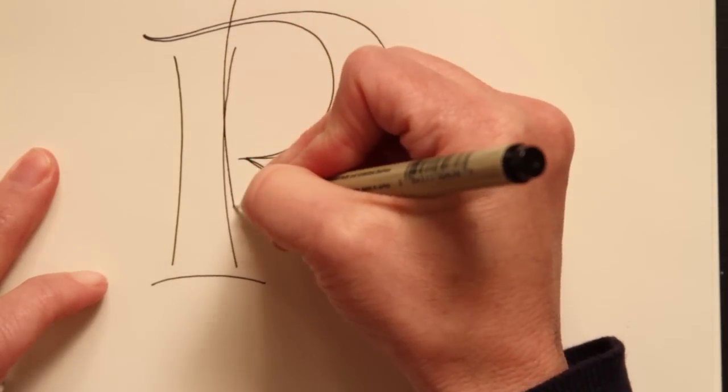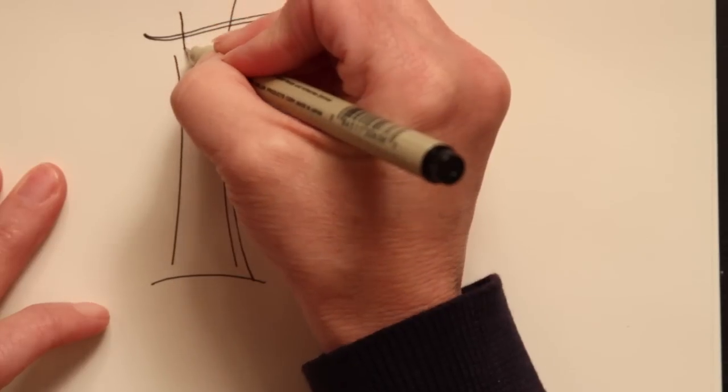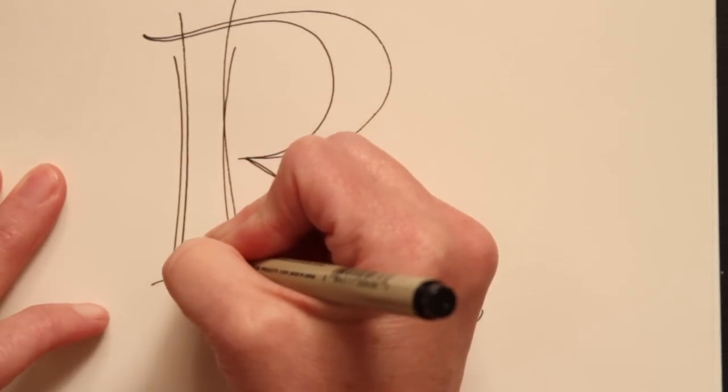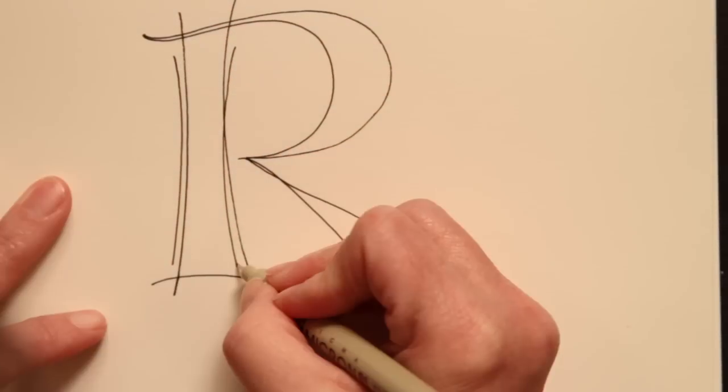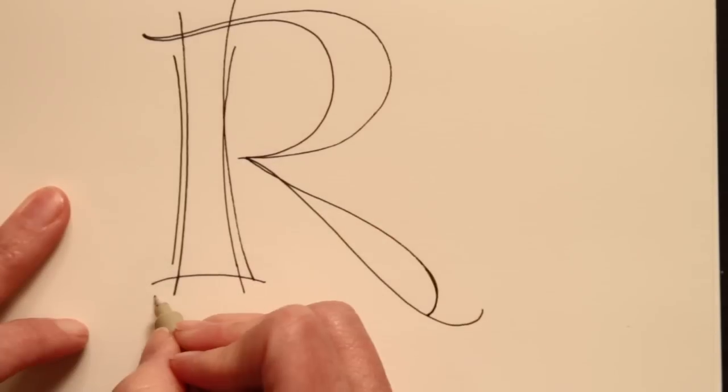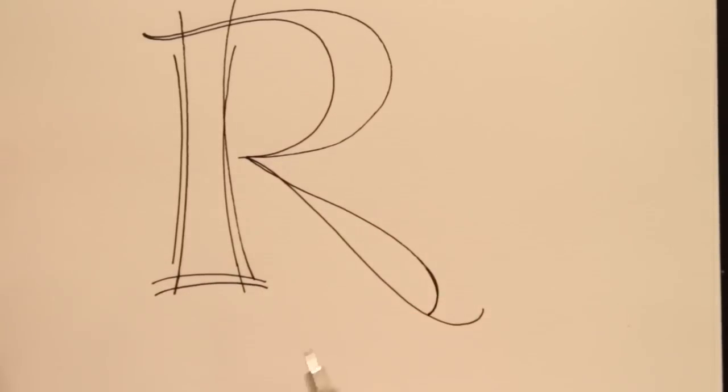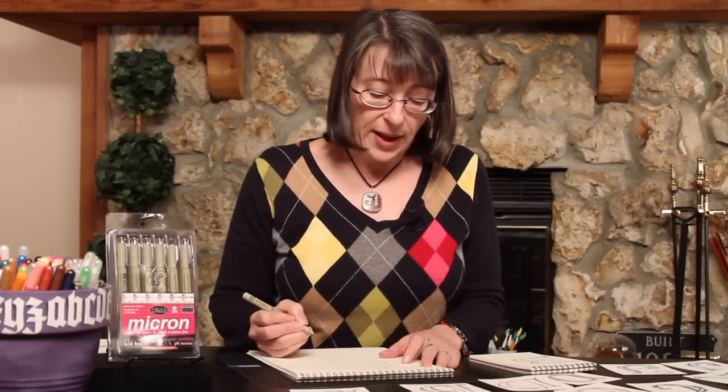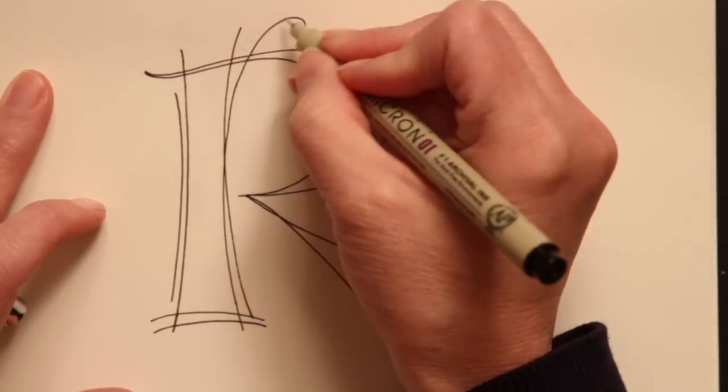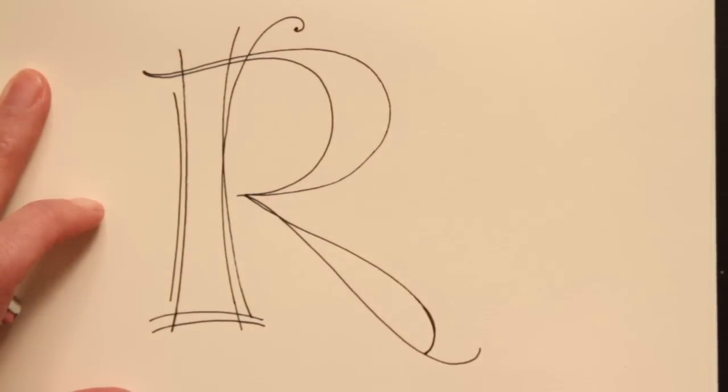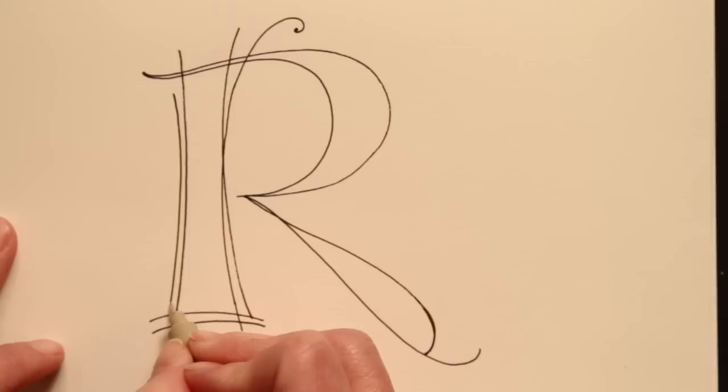You'll notice that when I'm drawing the R I did not try to connect these. It's much easier for me to try and get my patterning spaces by adding second lines. Adding a little bit of rounded elements to your letter is a nice touch.